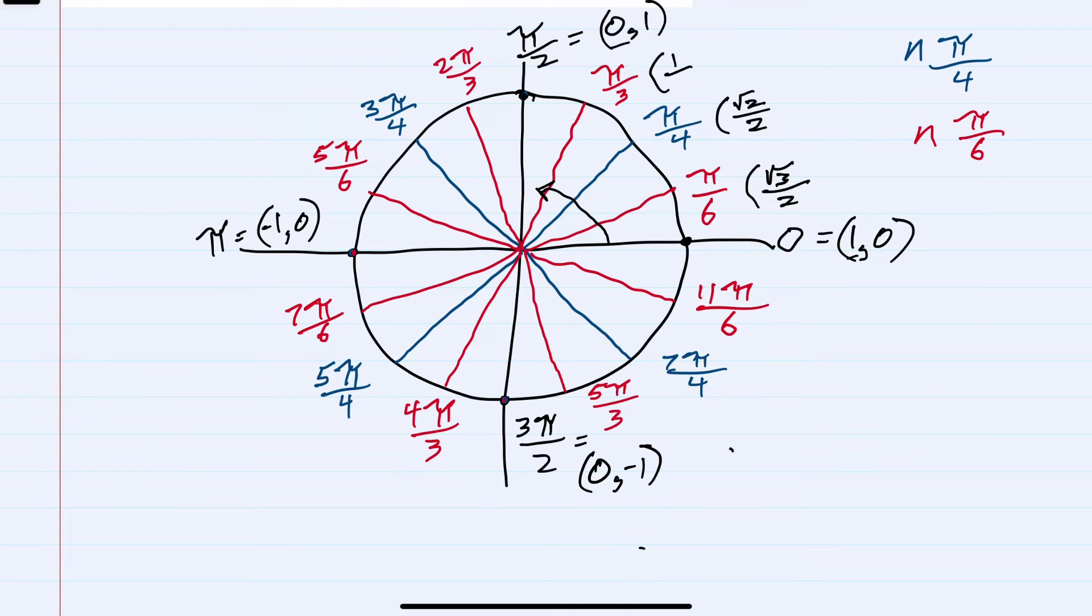Next we would have the square root of 1 over 2. Square root of one is one, so that's just 1/2. And then the square root of 0 over 2 would be our zero.